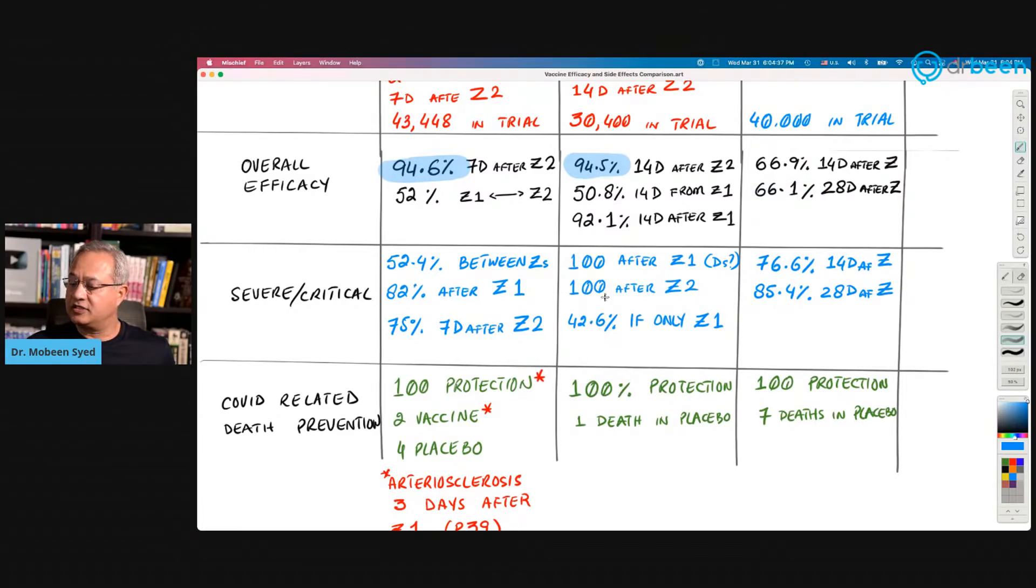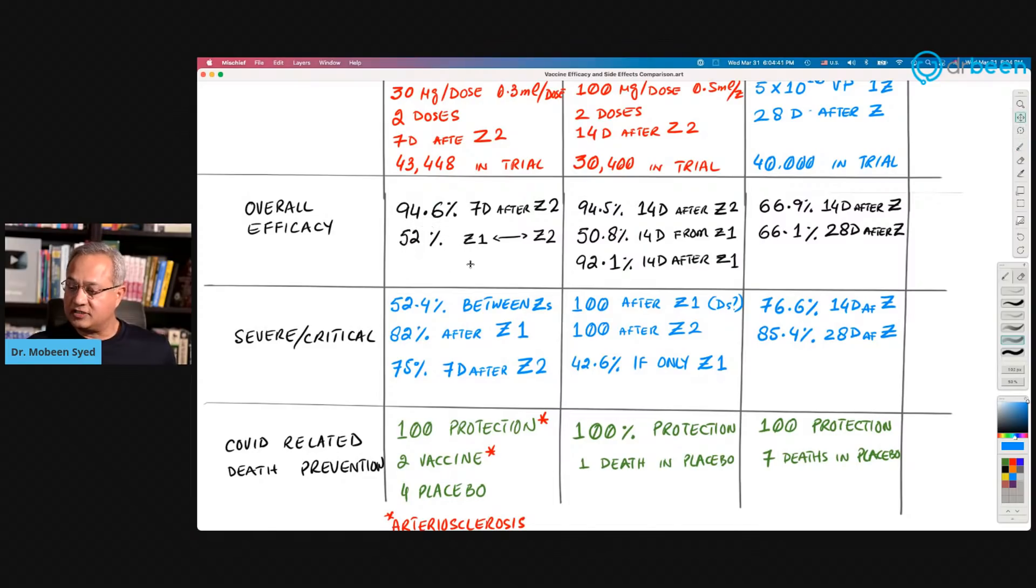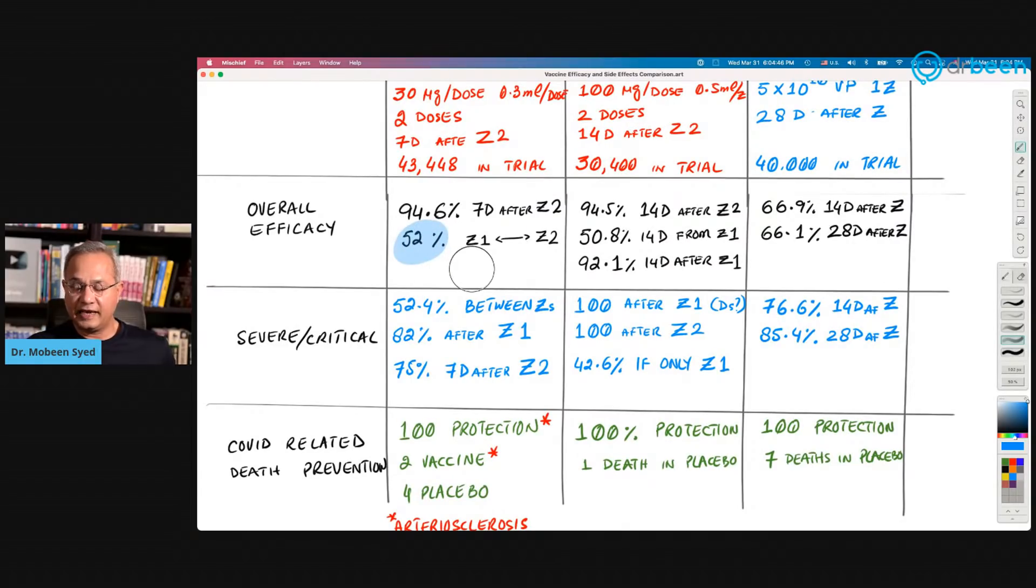In case of Pfizer and Moderna, there is something additional. In case of Pfizer, 52.1 percent, 52 percent efficacy between dose one and two. Many folks ask what is the protection between dose one and two? 52 percent efficacy. In case of Moderna, from dose one up till 14 days, 50.8 percent efficacy, and then up till the second dose. But after 14 days, 92.1 percent efficacy, which is pretty close to the efficacy even after the 14 days of the second dose. So some folks who have been thinking, what would happen after one dose only? If it's Moderna, one dose only, they say that till the second dose, there is 92.1 percent efficacy.